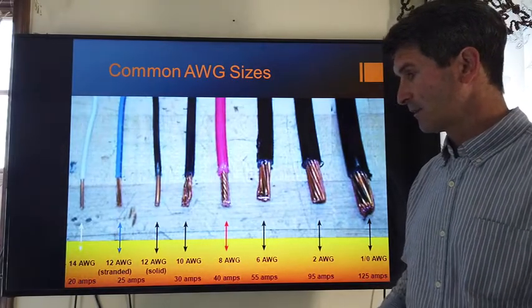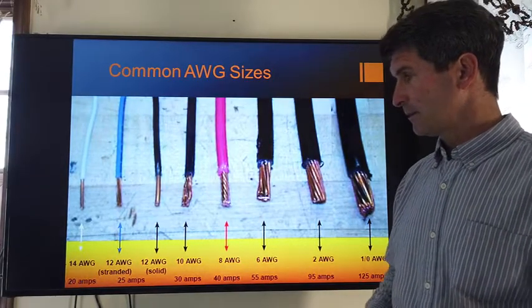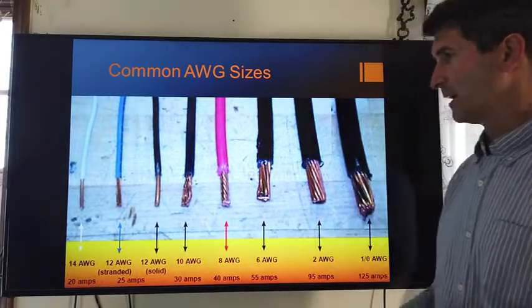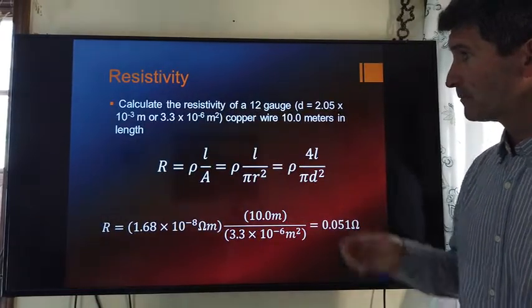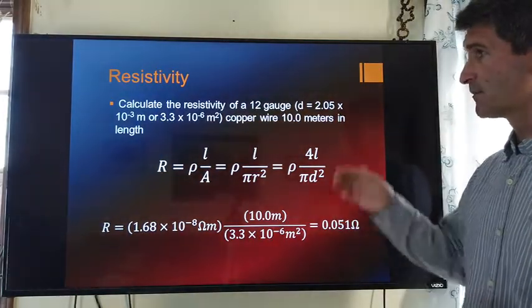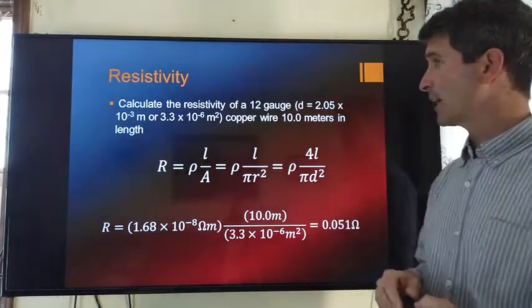Most of your house, however, is going to be wired with 12 gauge up to about 14 gauge at worst. Let's take a look at resistivity and resistance. We're going to take a look at 12 gauge wire.